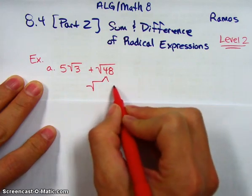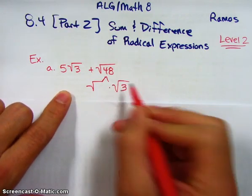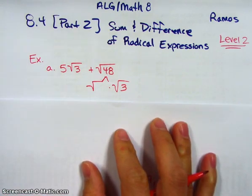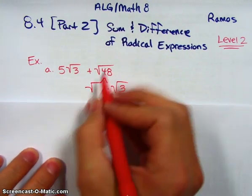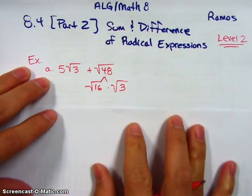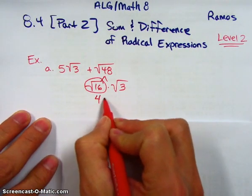Square root of 48, I really wish that it was something times radical 3. Let's try to think. 48 divided by 3. What is 48 divided by 3? Well, my calculator tells me that it's 16 times 3. Calculator is right. Square root of 16, that's my perfect square. That's my 4.